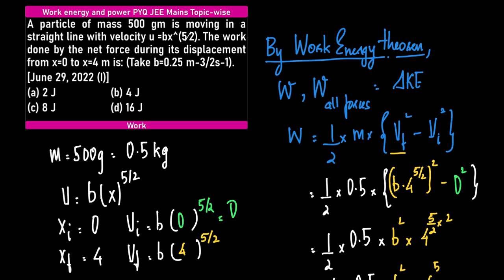When you take the square of b times 4 to the power 5/2, b squared is b squared, and 4 to the power 5/2 squared is 4 to the power (5/2 times 2). Why? Because (a^m)^n equals a^(mn).